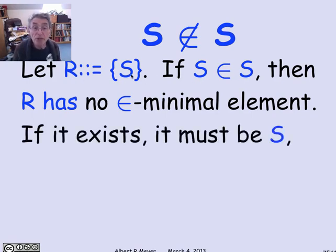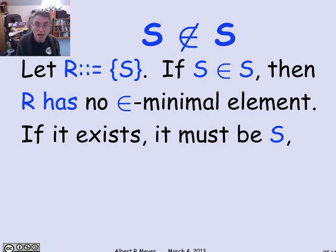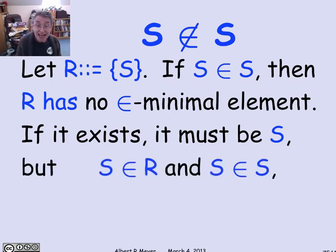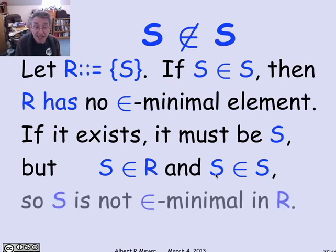Why does this follow? Well, R is supposed to have a membership minimal element. R has only got one element, so if it's got any membership element, it's got to be S. But S can't be membership minimal because S is in R, which means that S has an element in R in it. So S is not R minimal. The foundation axiom then immediately implies that you can't have S be a member of S. This argument extends in a nice way to member of a member and member of a member.